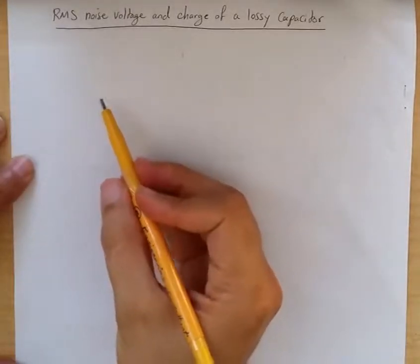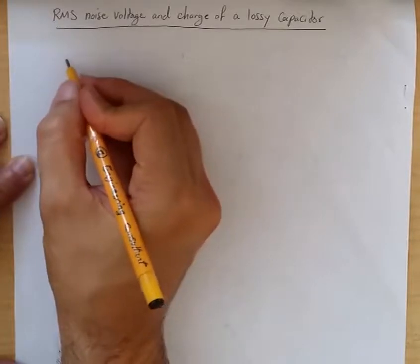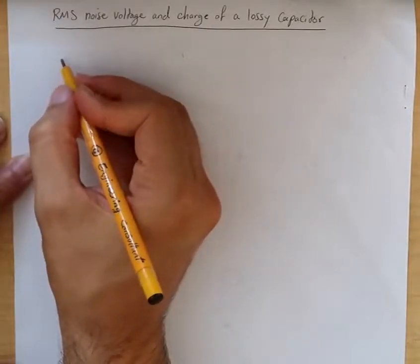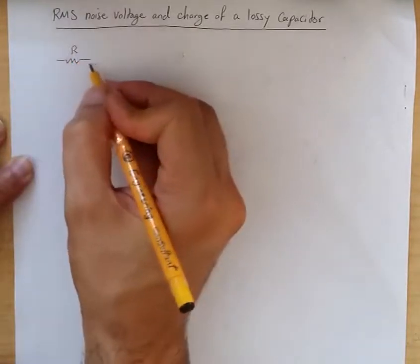How to compute RMS noise voltage and charge of a lossy capacitor. Consider a lossy capacitor that has a resistor associated with it. Here is the way we model that lossy capacitor.